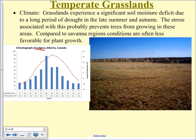Compared to savanna regions, conditions are often less favorable for plant growth because of these cold winter times that curtail growth. In a savanna things can almost grow all year long, but obviously on the prairie they're frozen for six months.